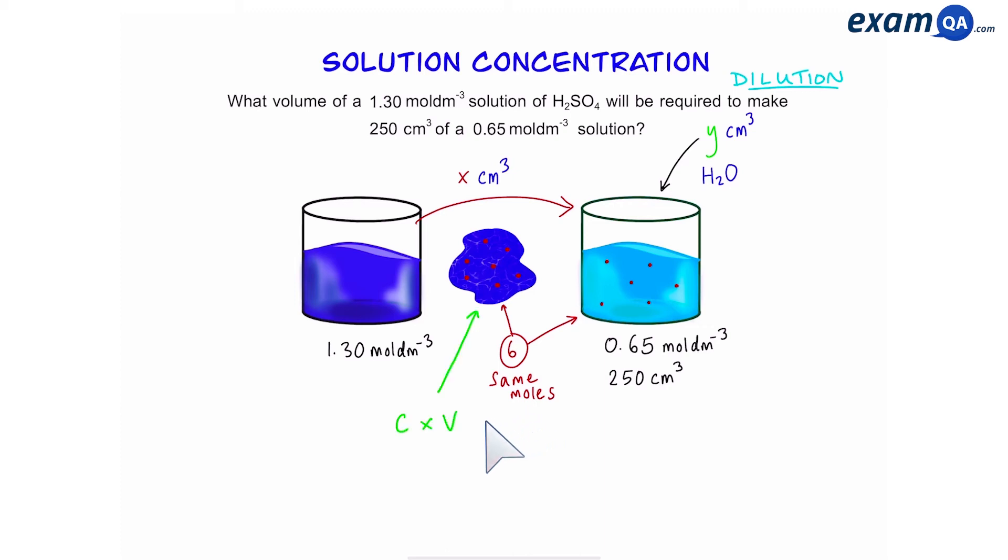In other words, concentration times volume before and concentration times volume after will be the same. Or we can say C1 V1 will be equal to C2 V2.